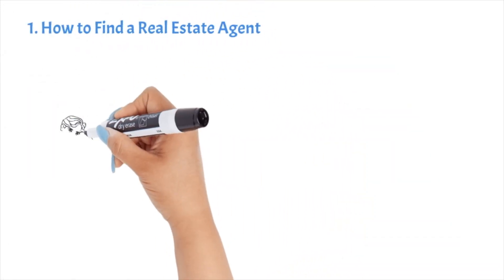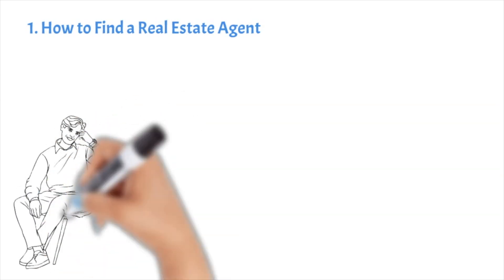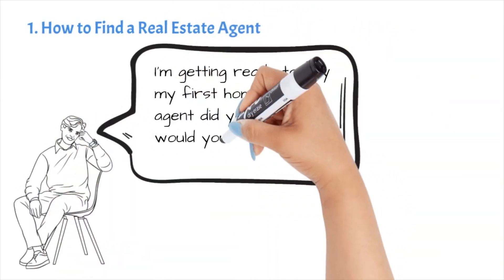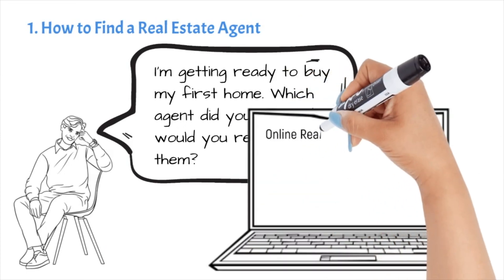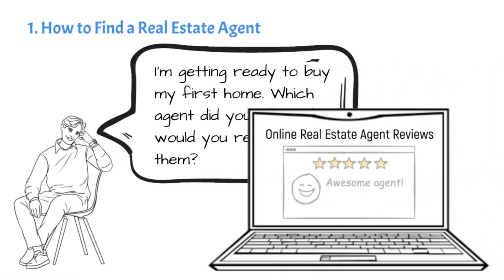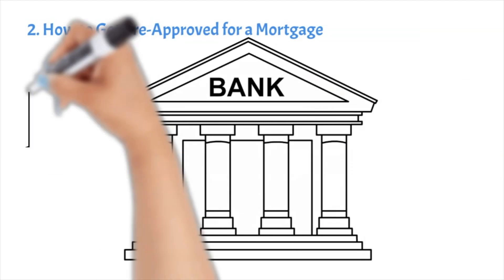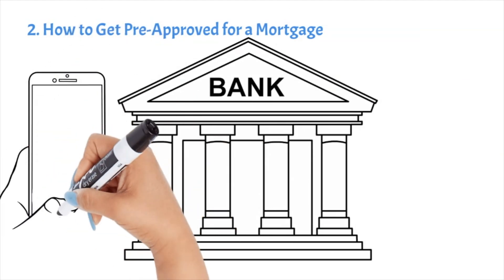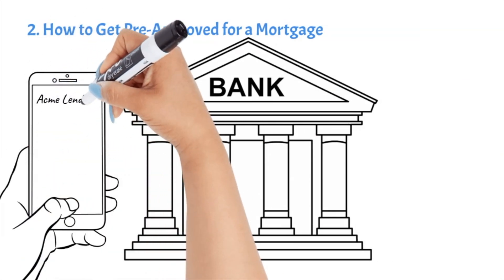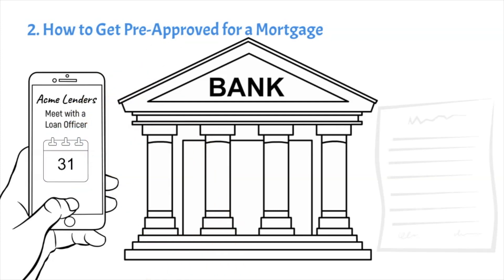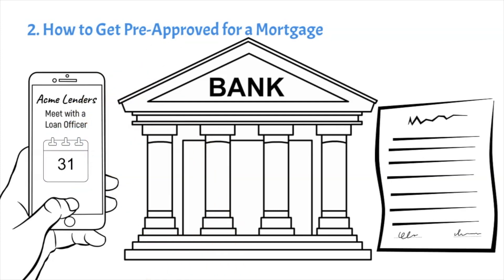First, you'll need to find a real estate agent. The best way to find a good real estate agent is to ask your friends and family for recommendations. You can also check online reviews. Once you've found a few agents, interview them to see if they're a good fit for you. The next thing you need to do is get pre-approved for a mortgage. To do this, you'll need to contact a lender and provide them with some information about your finances. Once you're pre-approved, the lender will give you a letter that says how much they're willing to lend you.